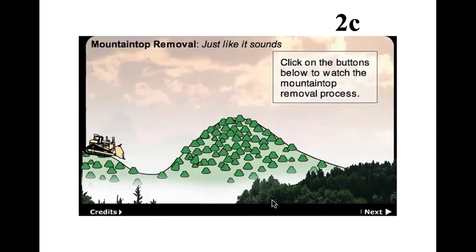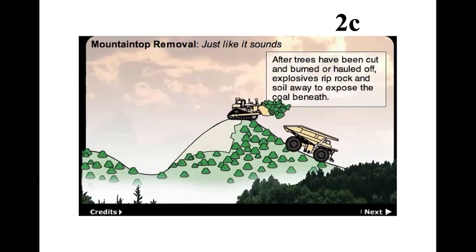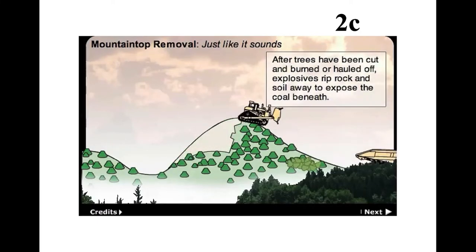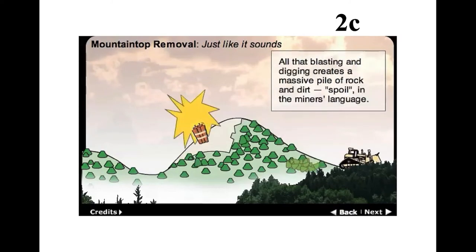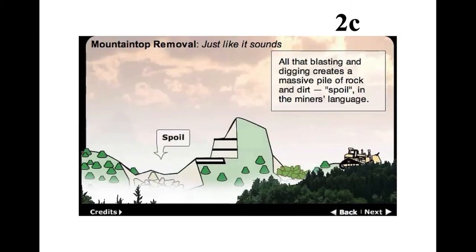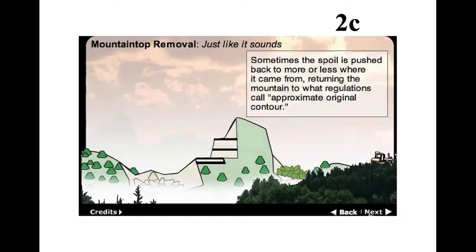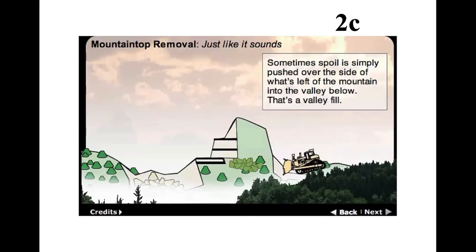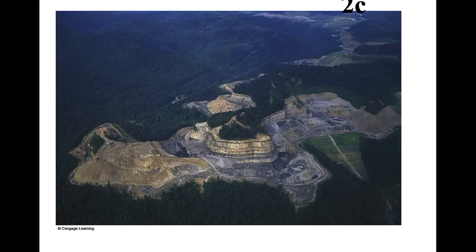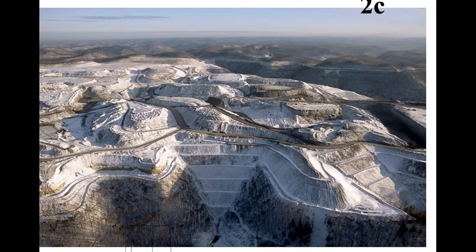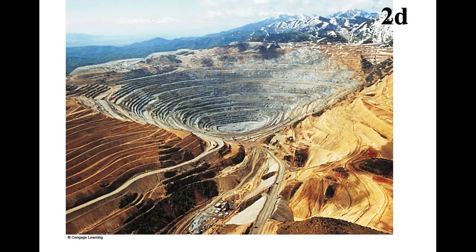2C is mountaintop removal. It's going to show a little animation — we'll watch it later in class. This is just going to show the process of mountaintop removal, which is exactly what it sounds like. They mine off the top of a mountain, and the excess material that they don't use a lot of times gets dumped into valleys. So you're removing the top of the mountain and depositing it in the valley — removing the topography from an area.